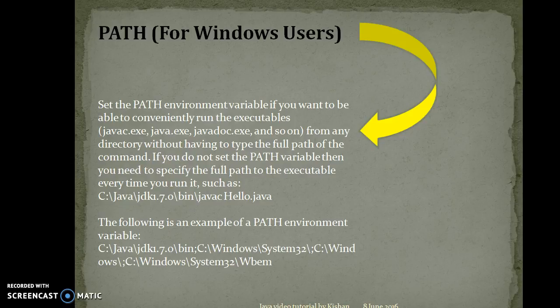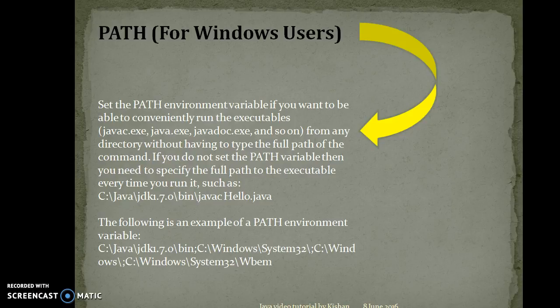If you do not set the Java PATH in your environment variable, then tools like javac, java, javap, and javadoc — the many tools available in your JDK bin folder — will not be recognized by your command prompt. In Windows, the DOS command prompt will not recognize these tools from the bin folder. That's why you need to set the classpath of Java, so you can run Java applications from any directory of your operating system.